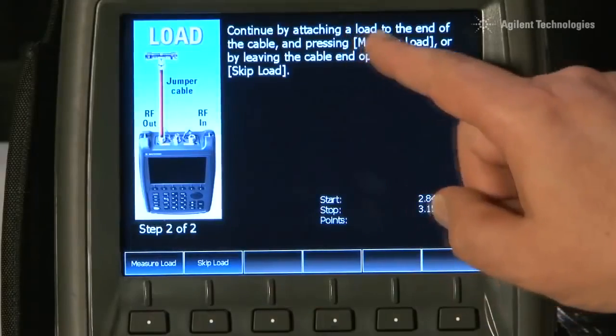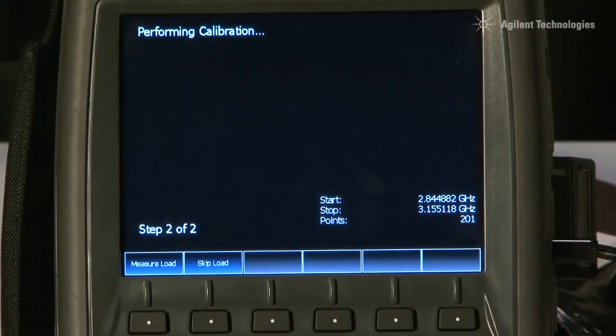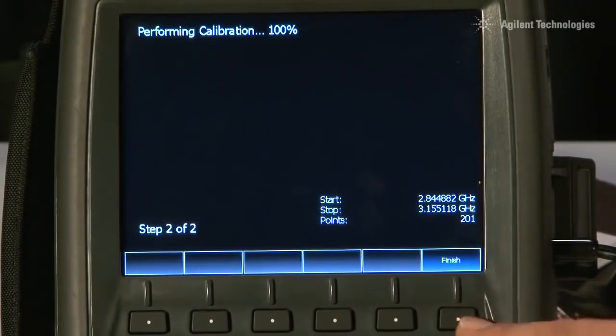We do have the option of connecting a 50 ohm load if we want a better quality Cal, but we do not need that in this instance, so I will press Skip Load, and then Finish.